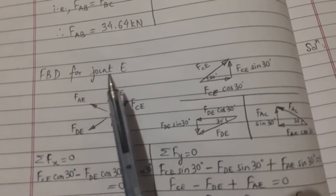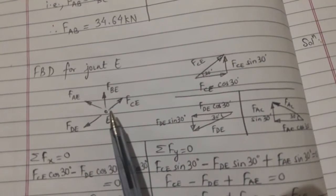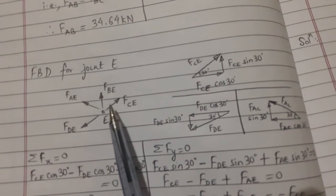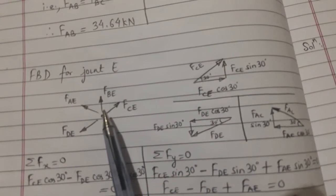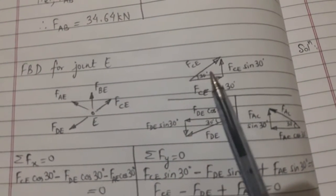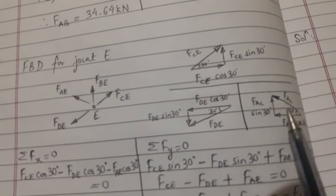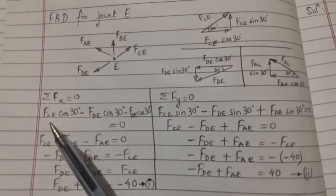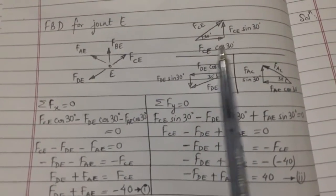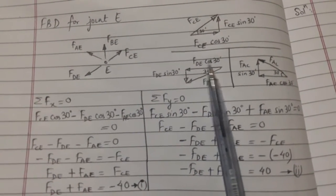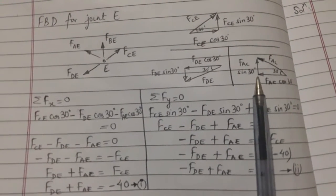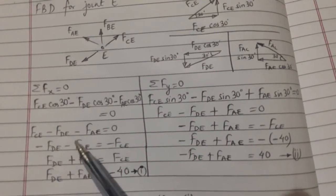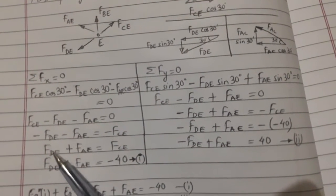For joint E, there are several forces: FBE, FCE, FAE, FDE. This is all our assumption. Then we took the components of individual forces. We took FCE cos 30 on the right hand side, that's positive. FDE on the left side, that's negative. FAE cos 30 on the left side, that's negative.